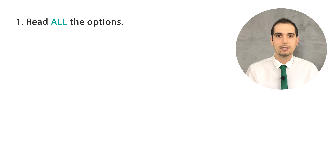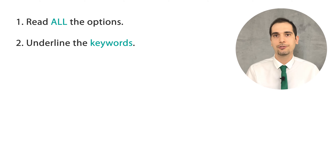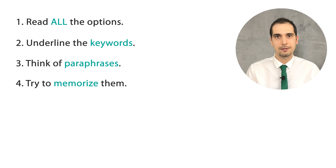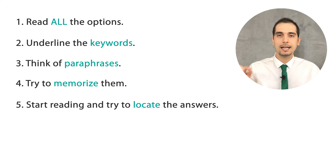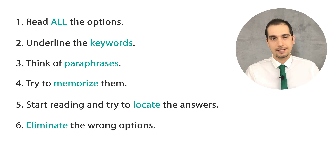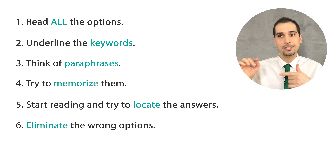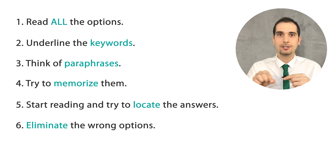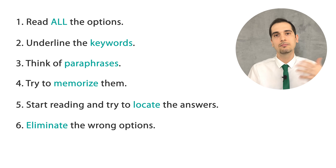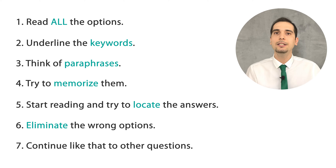So you read all the options very carefully, underline the keywords, understand them, come up with paraphrases, and try to memorize them. Then you go to the passage, locate the relevant section, and eliminate options one by one. For example, you arrive at option A — if it's mentioned, you select it; if not, you omit it. Then option D, then option B, and so on.